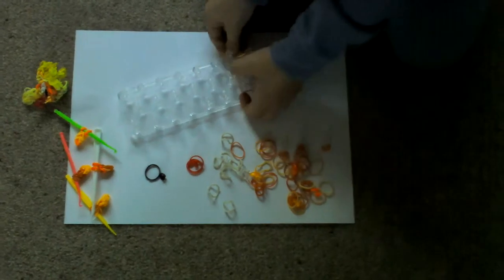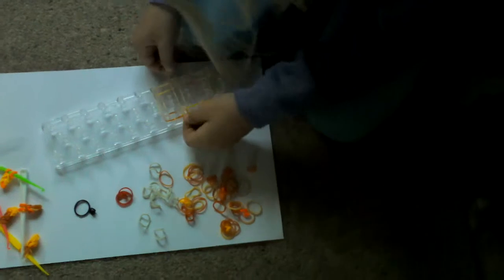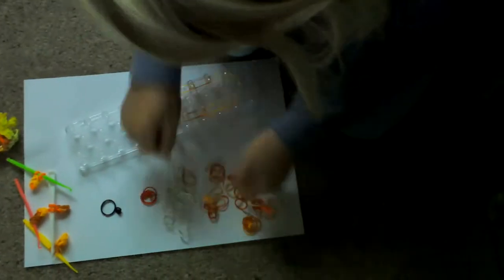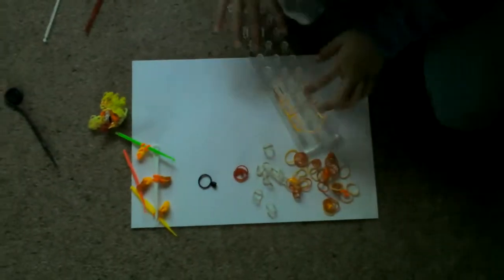Now we're going to take another single elastic band and you're not going to loop it, you're just going to keep it like that and put it there. You're going to take another one and loop it the same as the other one and put it there. So that would be our ear. Now we'll do the exact same on the bottom.